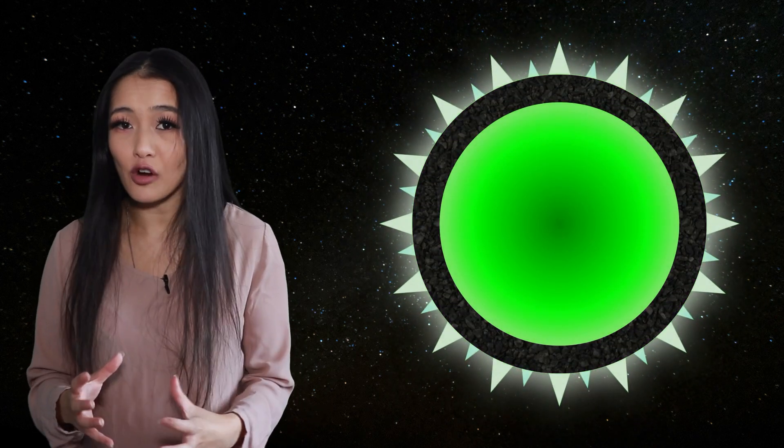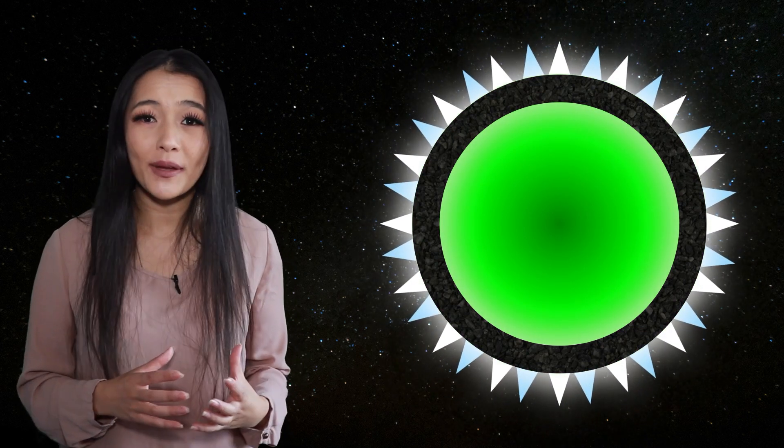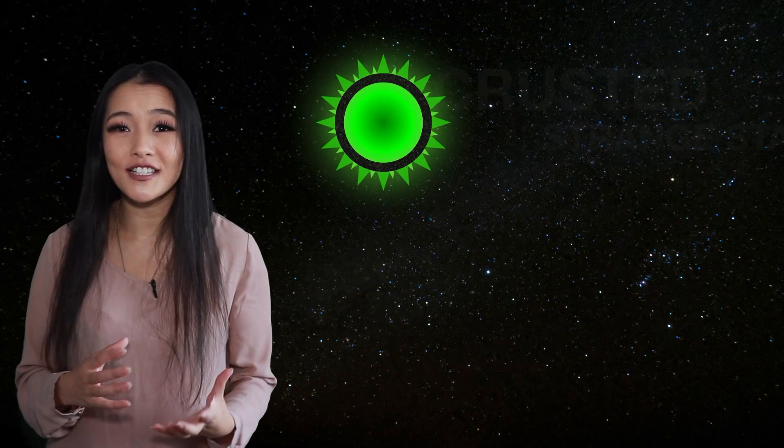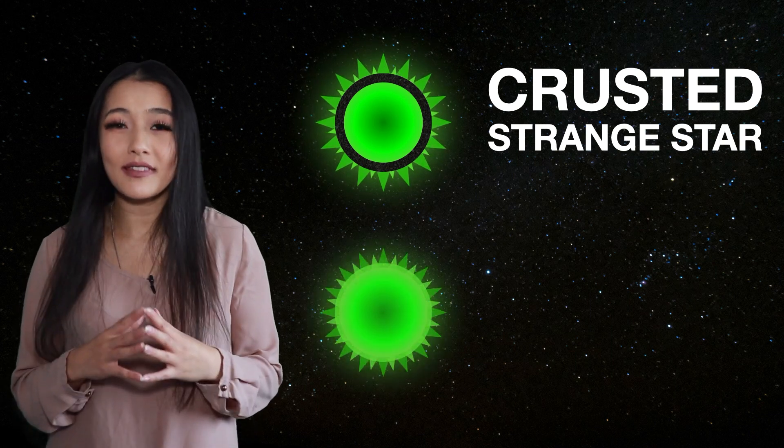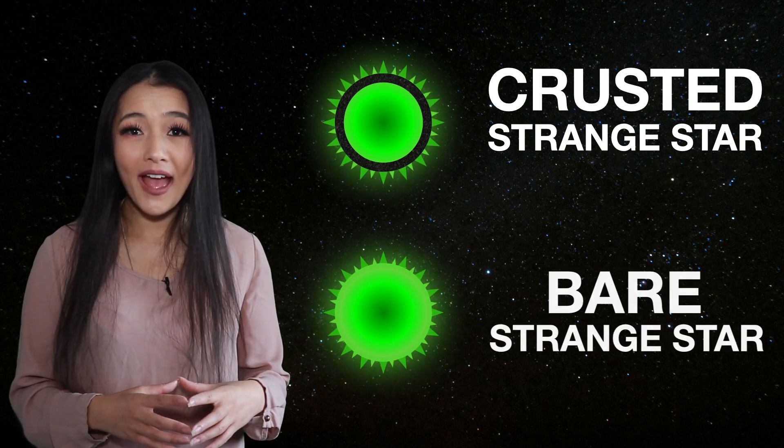They would be very hard to distinguish from an ordinary neutron star. Strange stars covered by such a crust are known as crusted strange stars, and those without crust are known as bare strange stars.